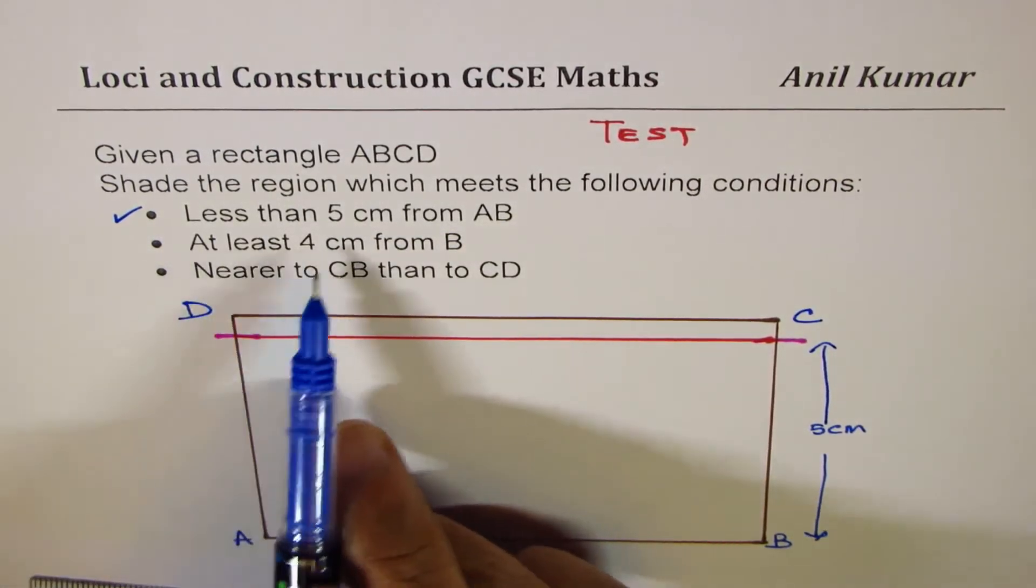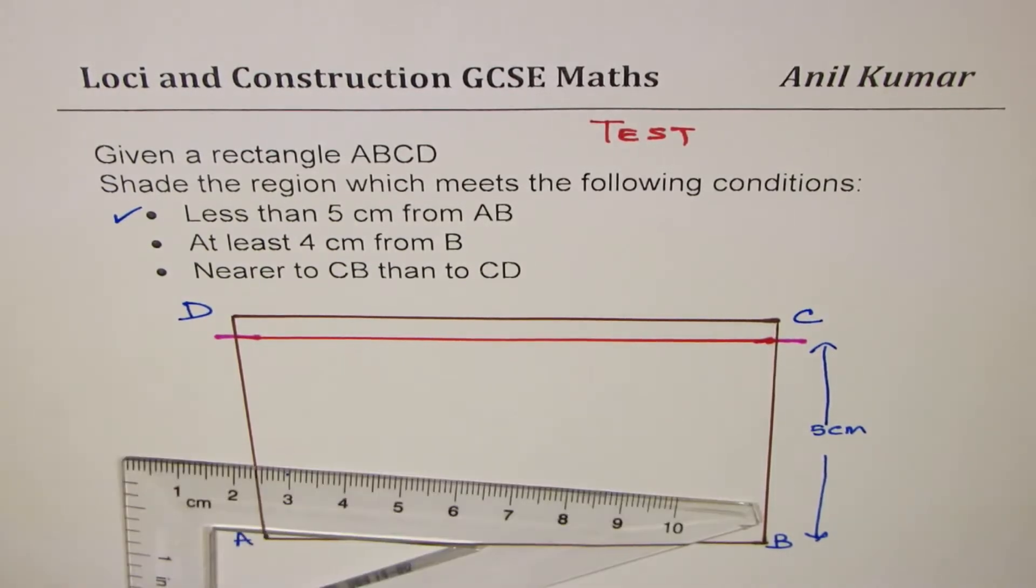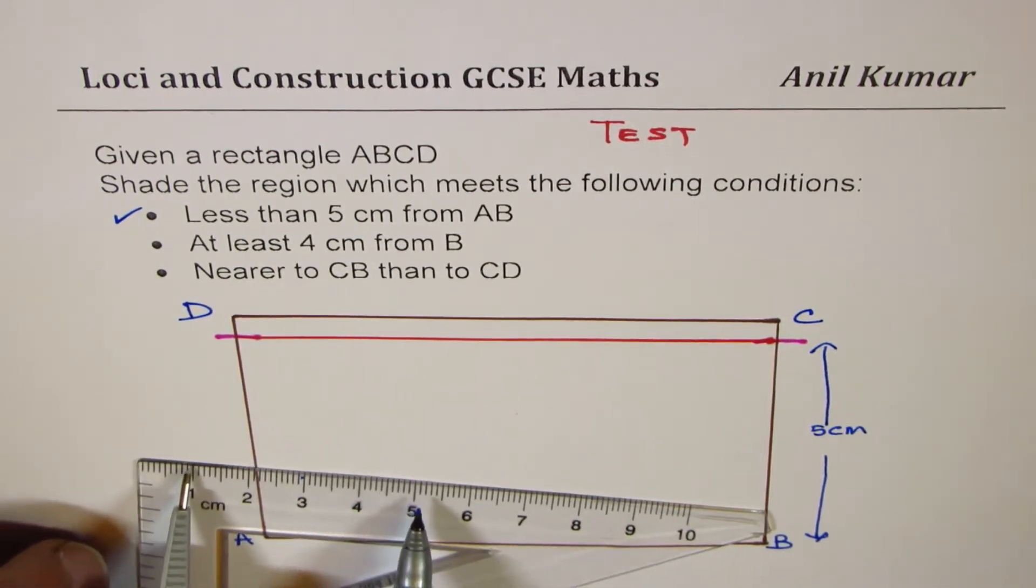Second, at least 4 cm from B. So how will you do that part? 4 cm. So let me open this 4 cm long. Let me use another color now. 4 cm. So 1, 2, 5 will make it 4 cm. So let us say this is 4 cm.